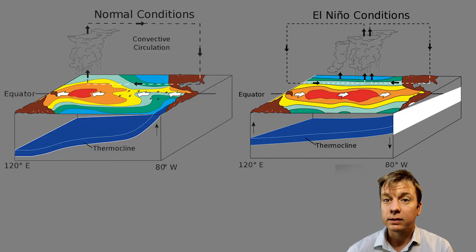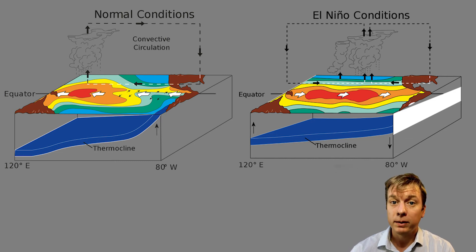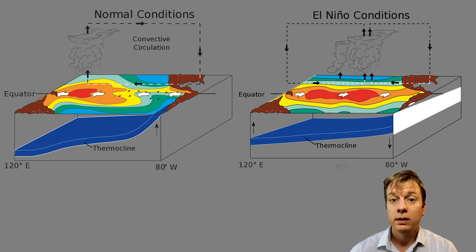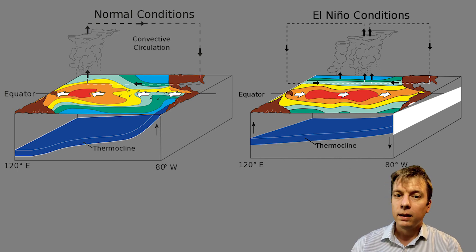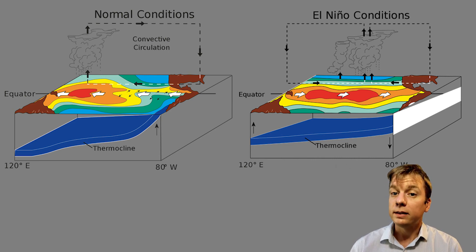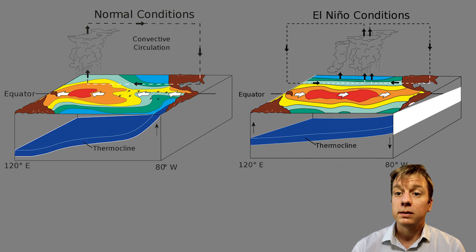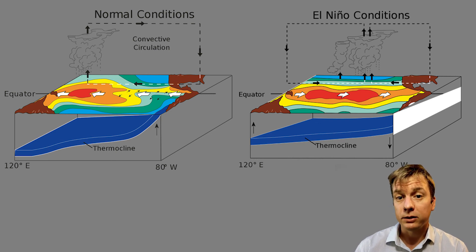However, every two to seven years, the atmospheric circulation reverses, the trade winds weaken, and the ocean warms, blocking this upwelling. This shift is called El Niño. In El Niño years, not only does this upwelling stop, but it brings heavy rain to North America and droughts to Southeast Asia.